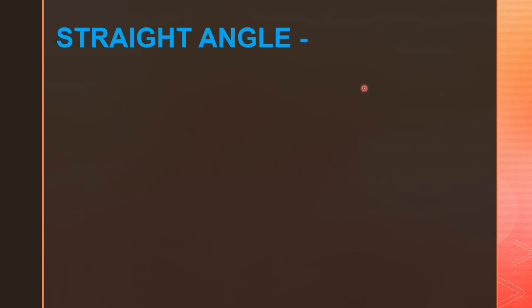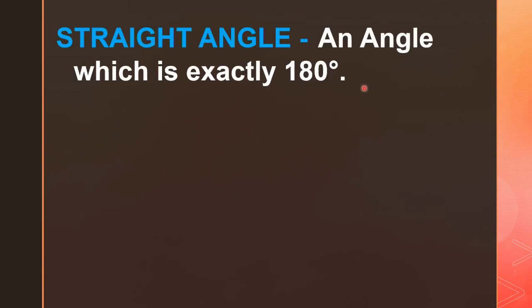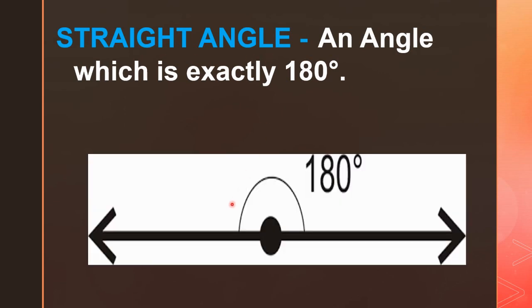Next one is the straight angle. An angle which is exactly 180 degrees is called a straight angle. Here in this picture you can see a straight angle. A straight angle measures 180 degrees.